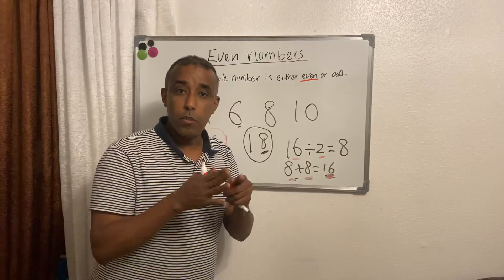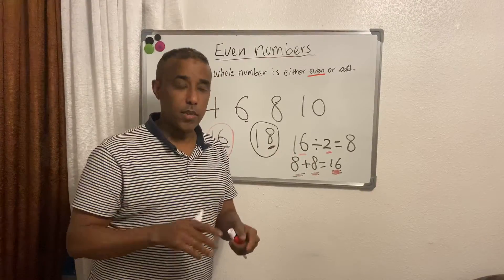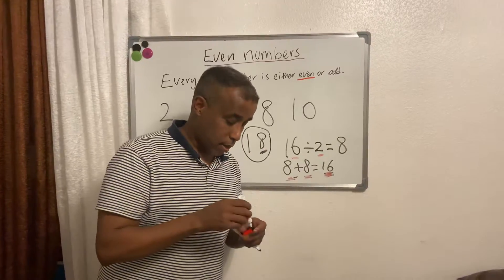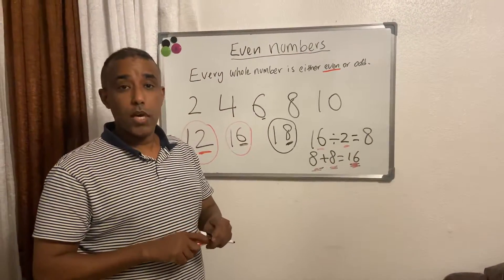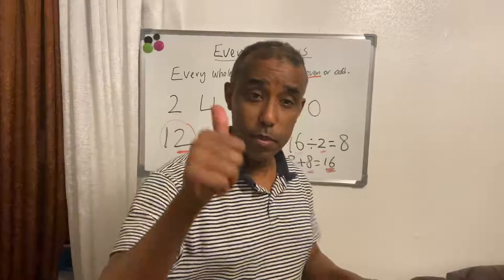One last thing is whenever the number you divide into two, it has to be equal numbers. Equal numbers are even numbers. Thank you very much for watching and make sure you like and subscribe and give it a big thumbs up.